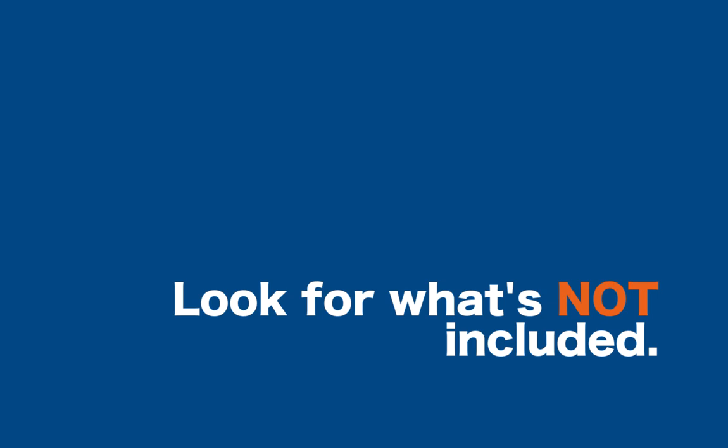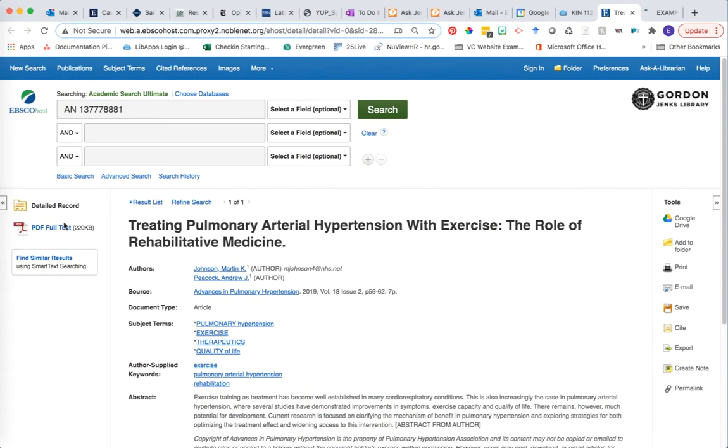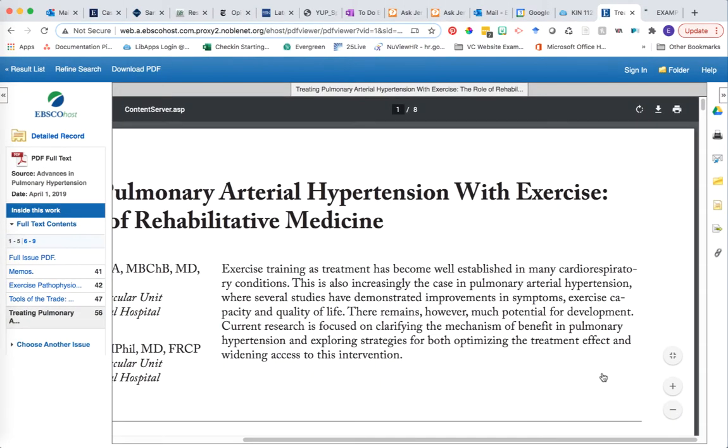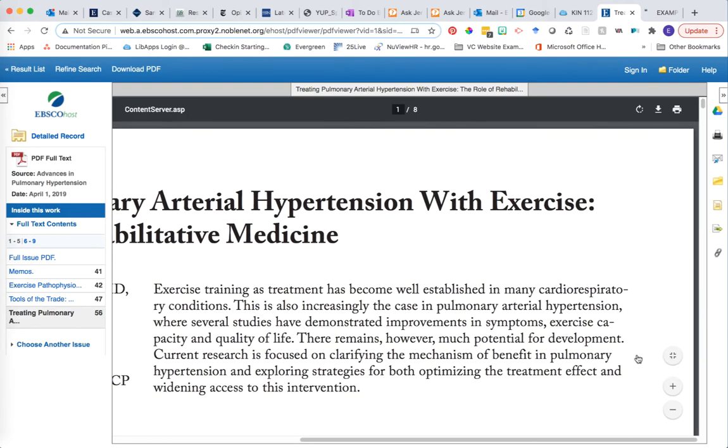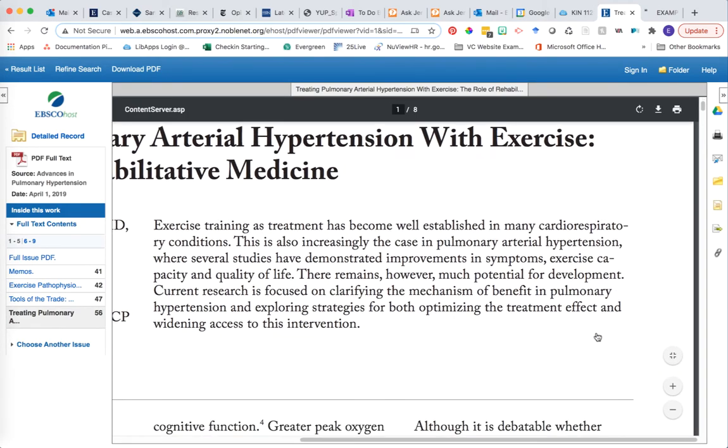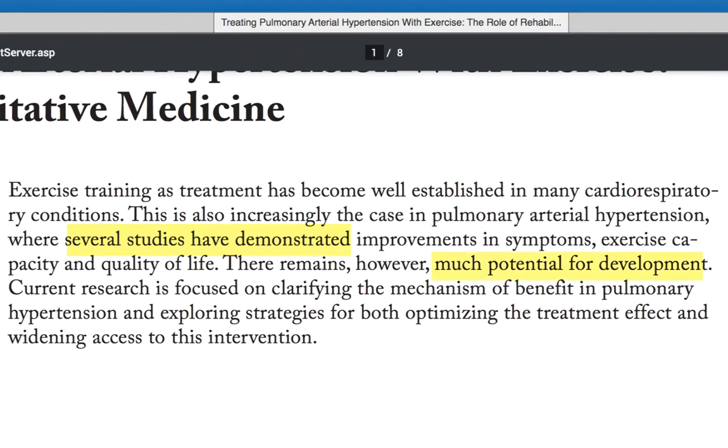You can almost tell if this is a review article by what's not included in the abstract of the article versus what is. Notice there is no mention of methodology of an actual study conducted. Instead it talks about the field of research as a whole and it talks about how there is room for more research in this field. The authors of this paper did not conduct original primary research.